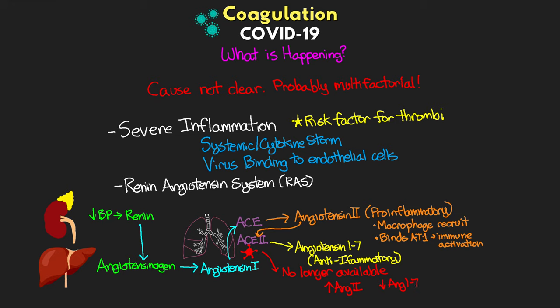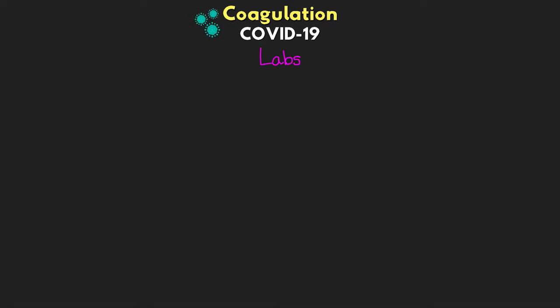The other risk factor we're seeing — especially in severe COVID-19 — is decreased mobility, which puts patients at risk for DVT and ultimately PE as well. Those are some of the things we think are leading to this coagulopathy in COVID-19 patients. From here, let's go over some of the labs we want to keep an eye on.